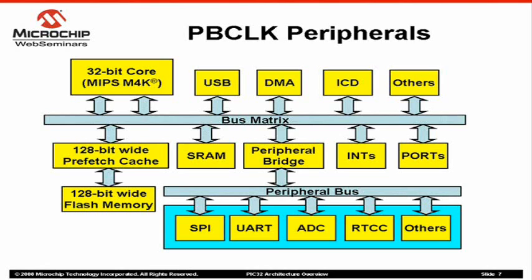The exact value of the PB Clock is determined by the settings of the Peripheral Bridge Module. Available options are to run PB Clock at 1-to-1, 1-to-2, 1-to-4, and 1-to-8 of SysClock speed.